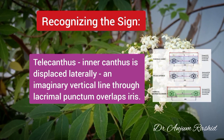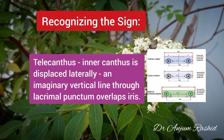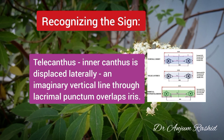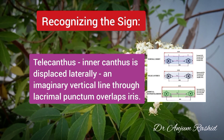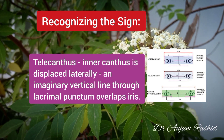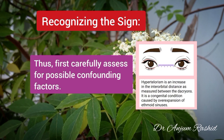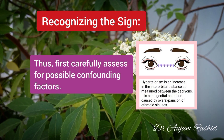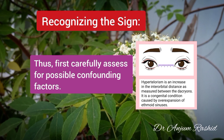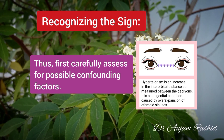A useful clinical guide is to assess whether an imaginary vertical line through the lacrimal punctum actually overlaps the iris. Should this be the case, then there is telecanthus. Thus, one's first clinical impression of hypertelorism needs to be more carefully assessed for possible confounding factors.